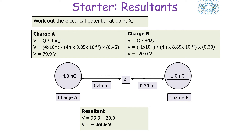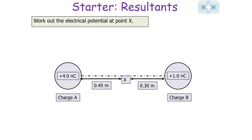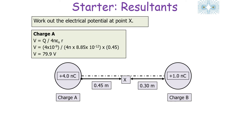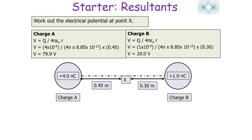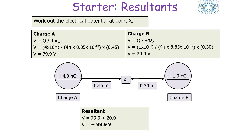It makes a difference whether the charge is positive or negative. Let's run through again but this time with two positive charges: +4 nanocoulombs and +1 nanocoulomb. The potential at X from charge A is again 79.9 volts. For charge B, this time the charge is +1×10⁻⁹, so instead of −20 volts we get +20 volts. Adding the two values, the resultant electrical potential is +99.9 volts.